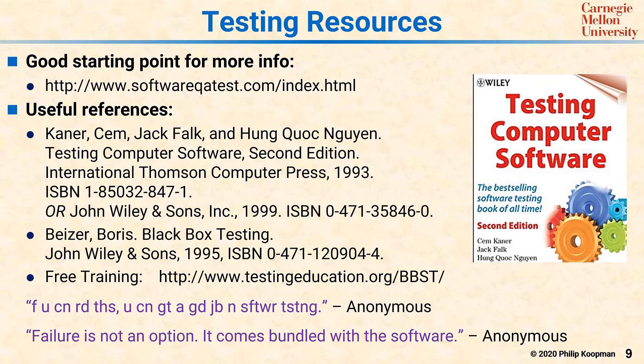It's important to point out that there are two schools of thought with testing. There's the school of thought for everyday software testing, and most of the references here are from that school. That works well if you have everyday quality software, where the idea is to get the software out and provide value as quickly as possible with a modest testing cost. In that case, a lot of exploratory testing and agile practices make sense, because they're going to find the high-value bugs and fix them to get the software out the door quickly.